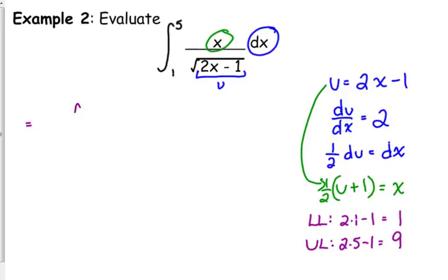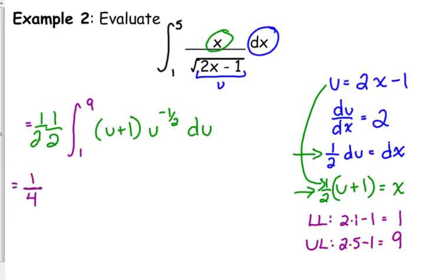Let's make all of our substitutions. My limits are now 1 and 9. My x up there is 1 half. I'm going to put that 1 half in front. U plus 1. I've got a square root in the denominator. So, that's u to the negative 1 half. And, dx gets replaced with 1 half du. So, I have two 1 halfs in the front. Don't lose either one of those. One of them came from my substitution for x. One of them came from the substitution for dx. 1 half times 1 half is 1 fourth. I've got to distribute the u to the negative 1 half. So, that becomes u to the 1 half plus u to the negative 1 half.